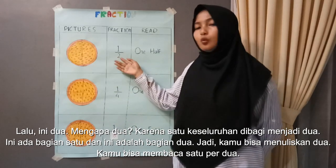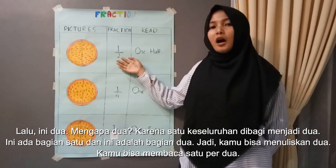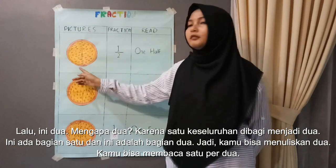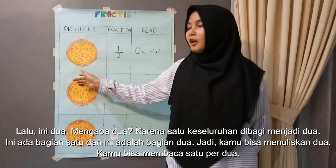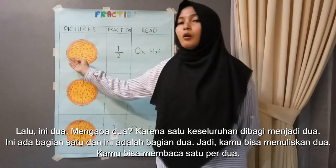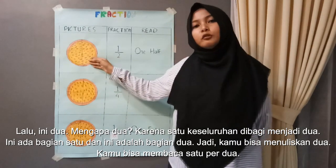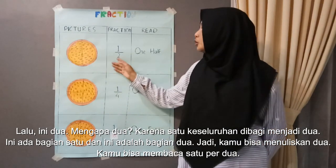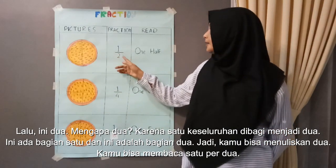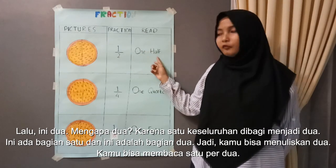And then, this is two. Why two? Because one whole pizza we divide into two — this is part one, this is part two. So you can write two. And then you can write one half.